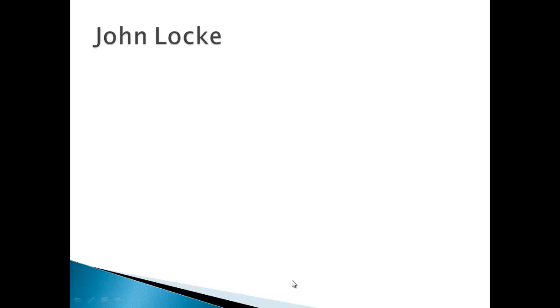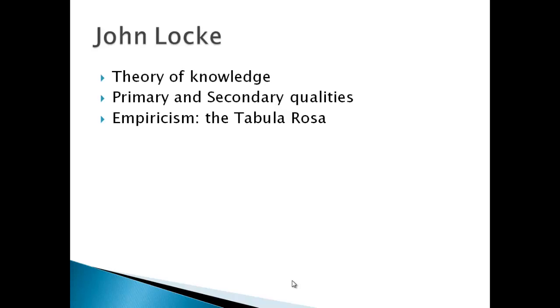Perhaps the most influential person of modern philosophy would be John Locke. John Locke dealt with both epistemology, metaphysics, and political philosophy. We're going to talk about epistemology first. John Locke talked about the theory of knowledge — how do we get to know things? He argued that we can only know things mostly by experience.